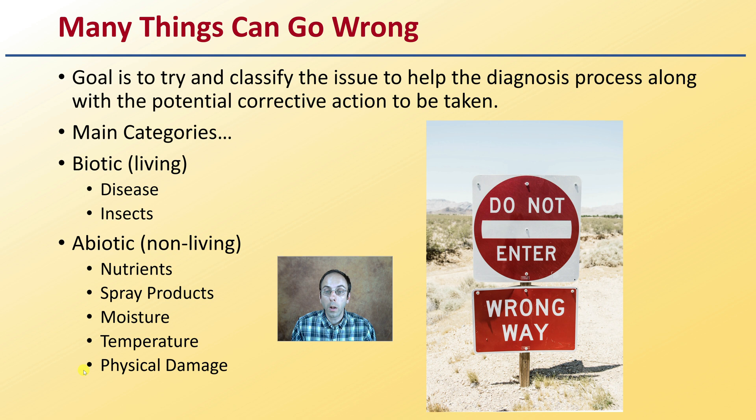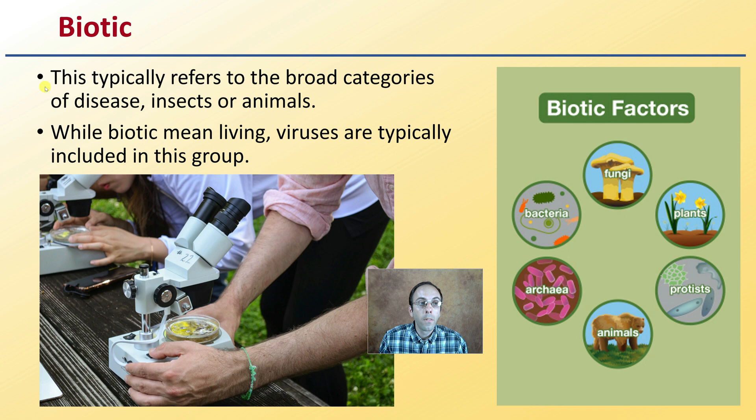Starting with biotic — biotic means living. These typically refer to a broad range of disease, insects, or animals. While biotic means living, viruses are typically included within this group. It also considers fungi, bacteria, protists, animals, and archaea — all classified as biotic factors.